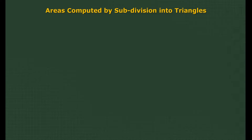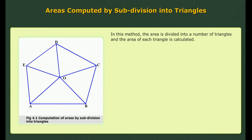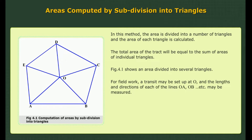Computation of areas by subdivision into triangles: In this method, the area is divided into a number of triangles and the area of each triangle is calculated. The total area of the tract will be equal to the sum of areas of individual triangles. Figure 4.1 shows an area divided into several triangles. For field work, a transit may be set up at O, and the lengths and directions of each of the lines OA, OB, etc. may be measured.